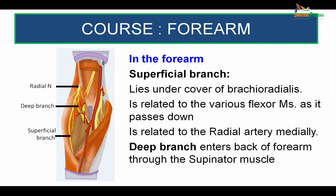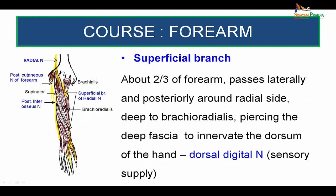In the front of the forearm, the superficial branch lies under cover of brachioradialis for a long distance — the upper two-thirds is under cover of brachioradialis. In the middle one-third, it lies in relation to the radial artery on its medial side. The deep branch exits by passing through the supinator muscle. The superficial branch, at about two-thirds of the forearm, passes laterally and posteriorly around the radial side deep to the brachioradialis tendon, pierces the deep fascia to innervate the dorsum of the hand through dorsal digital nerves — which is exclusively a sensory supply.